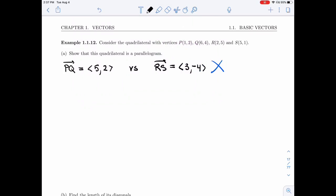If PQ is not a side, maybe PR is. So let's try PR. So PR, I go from 1 to 2, so the delta X is 1. And from 2 to 5, the delta Y is 3.